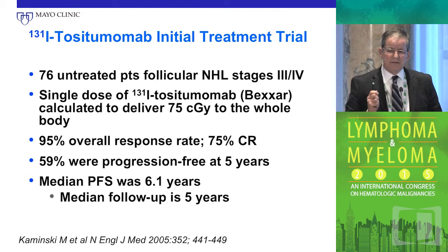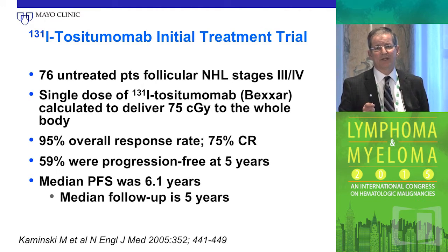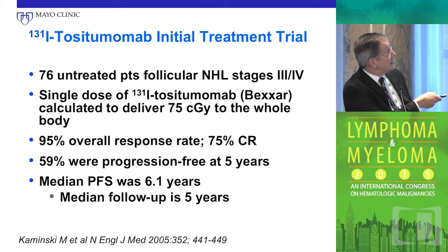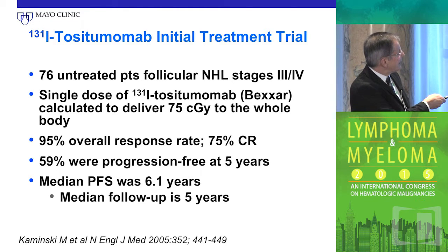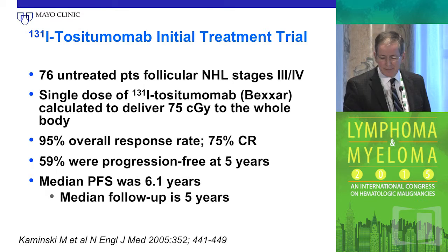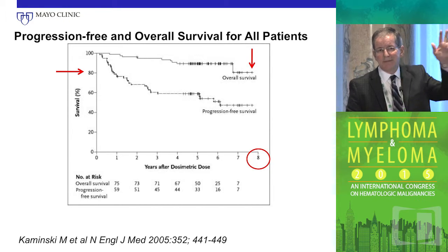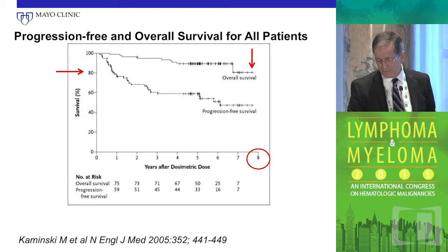That 90% figure is based on the Kaminsky study, now 10 years old, published in the New England Journal of Medicine. Using a single dose of Bexxar — the iodine antibody — he found a high response rate, high CR rate, and about 60% progression-free at five years. Importantly, there was essentially no MDS in this series except for one case after transplant. So giving radioimmunotherapy upfront has a very low risk of hurting the bone marrow.